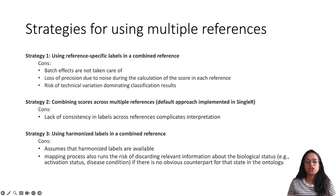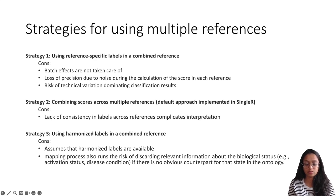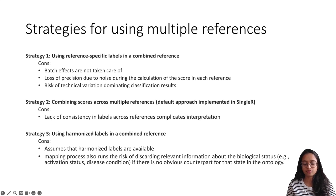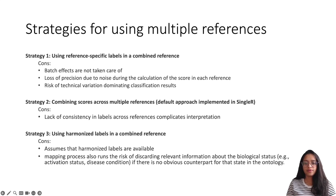The authors of the SingleR package recommend three strategies one can use to perform cell type annotation using multiple references. The first strategy involves using reference-specific labels in a combined reference. When we say combined reference, we don't mean references where the labels are harmonized — we just mean combining both the separate references, combining the expression matrix and labeling each label in context of its reference dataset. For example, if we have reference X and reference Y and both have B cells, the B cells from reference X will be considered a separate entity compared to B cells in reference Y.